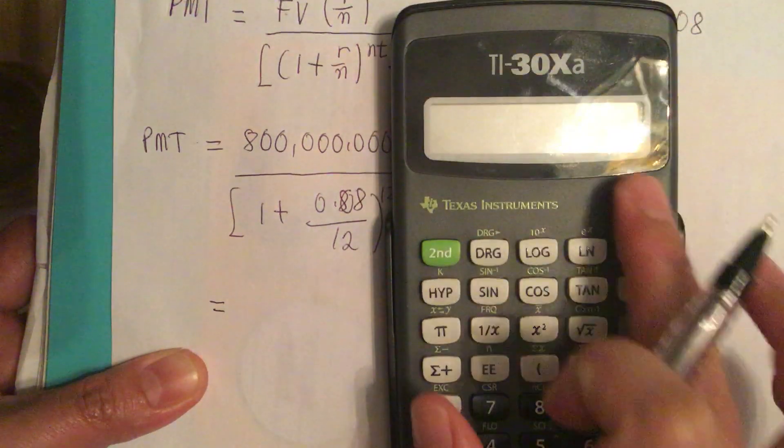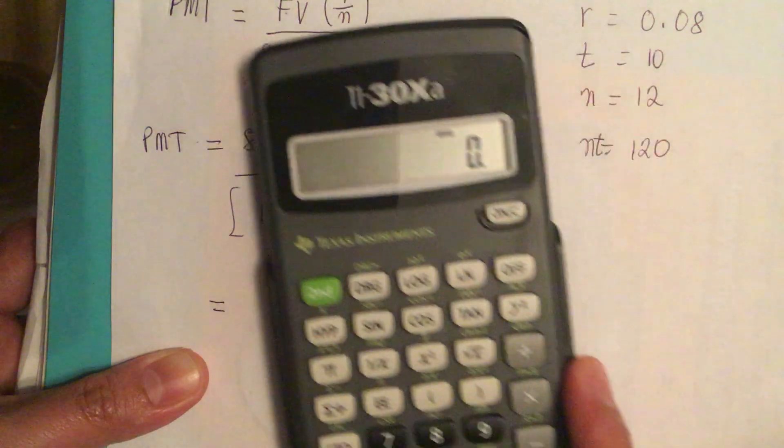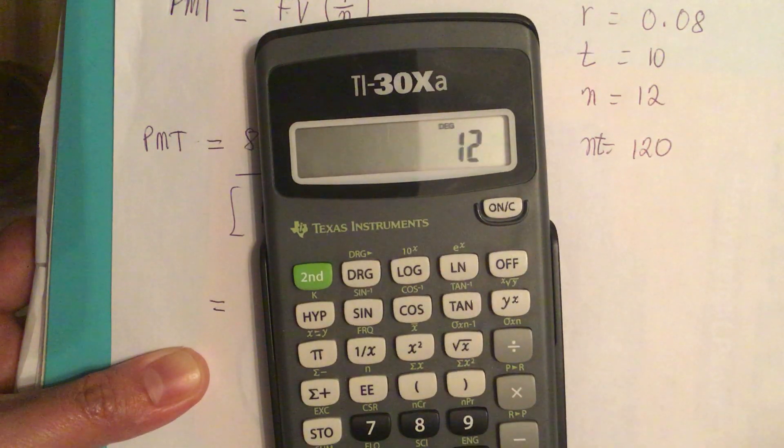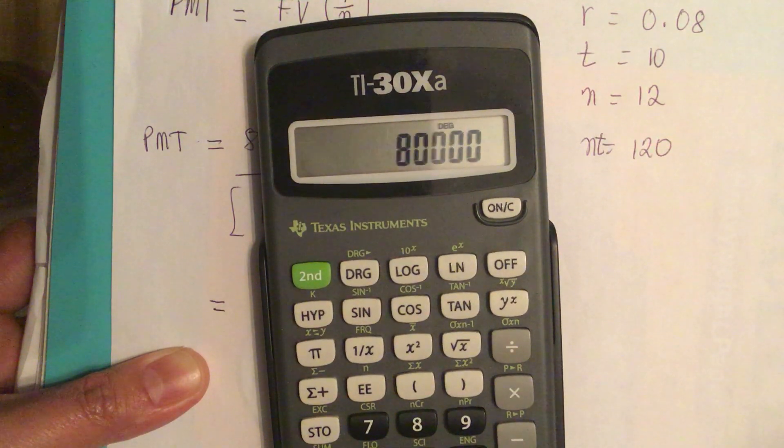So we calculate this starting here: 0.08 divided by 12 times 800 million.